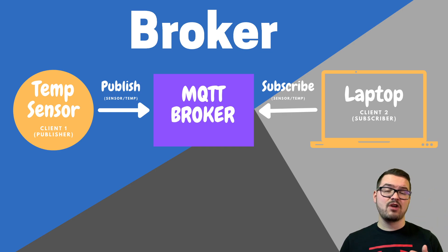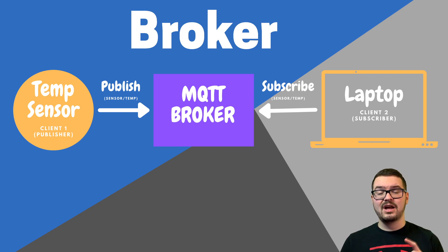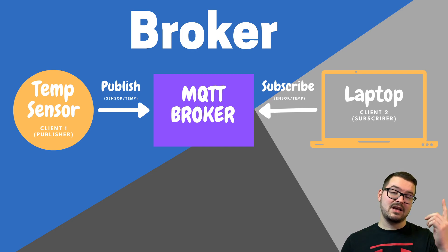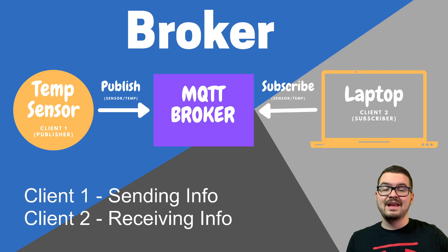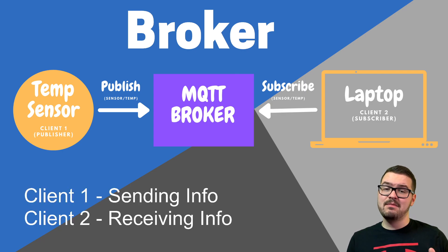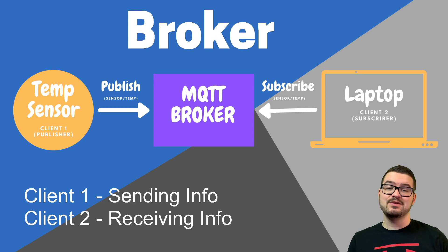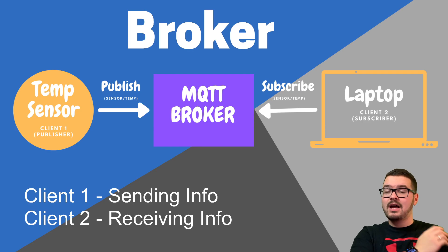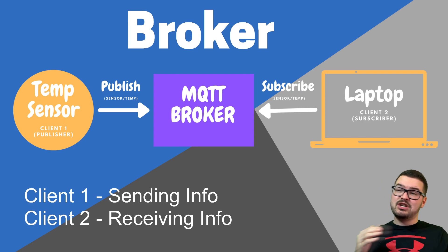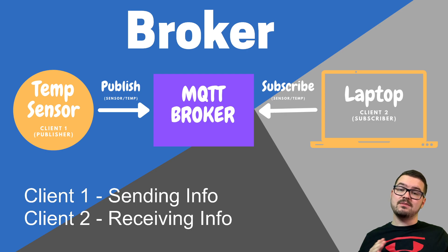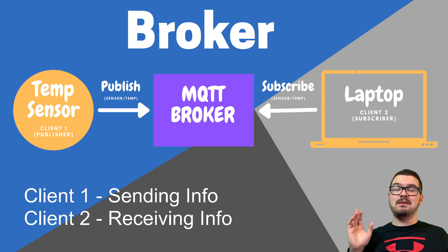A client can be a publisher, a subscriber, or both. In this example, client one is the publisher and client two is the subscriber. In MQTT, the way we route things being published and register interest in messages being received is by using topics. Client one is doing a publish — passing its information on — and client two is doing a subscribe, registering its interest in a particular message when it becomes available.